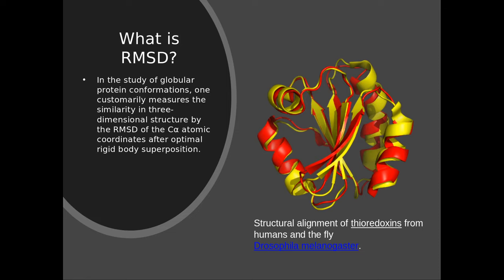As you see here in a protein — this image is from Wikipedia — the red is the average or initial structure and the yellow is the structure after simulation. When you superimpose them you can see they are slightly displaced, so RMSD gives us the displacement compared to the initial structure.